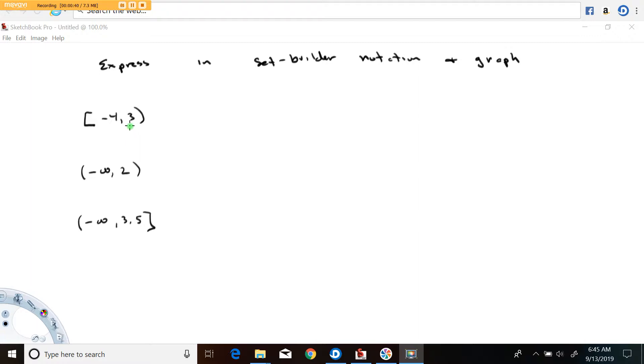Alright so to express this in set builder notation here's what that looks like. The set of all x such that, that's how this reads, and x is bound between minus 4 and 3. So I'm just going to put this negative 4 is less than or equal to x is less than 3. Close the set.